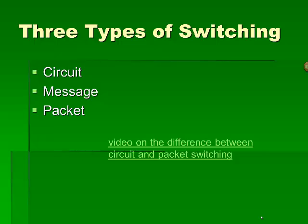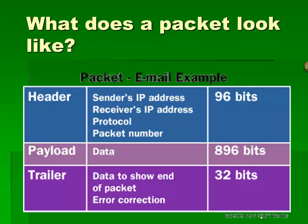There are basically three types of switching: circuit switching, message switching, and packet switching. I will focus on packet switching because that's the kind of switching involved in the Internet. A packet is basically a collection of bits with a header, a payload, and a trailer. The header, which is originally 96 bits, includes the sender's Internet Protocol address, the receiver's Internet Protocol address, and the protocol packet number. The biggest part of the packet is the payload with data in it, at 896 bits. The trailer shows the end of the packet and provides information for error correction.